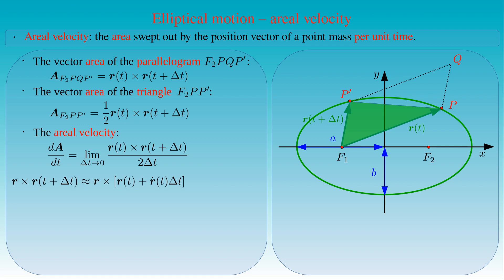This can be substituted into the cross product. If we factor out the terms in the square bracket, then the cross product of the position vector R(t) with itself vanishes. Then we obtain the cross product of R(t) and R-dot times delta t, and we can insert this result into the definition of the aerial velocity.